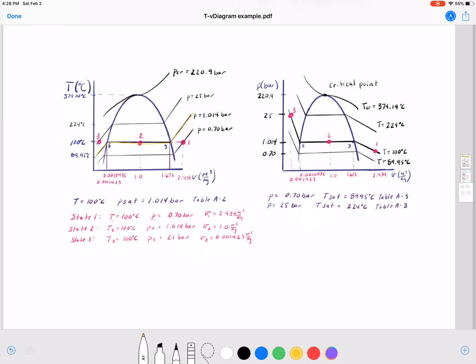So everything over here is vapor, everything over here on to the left of the dome is liquid, and then everything in the dome is a two-phase liquid vapor. So this is two-phase liquid vapor.